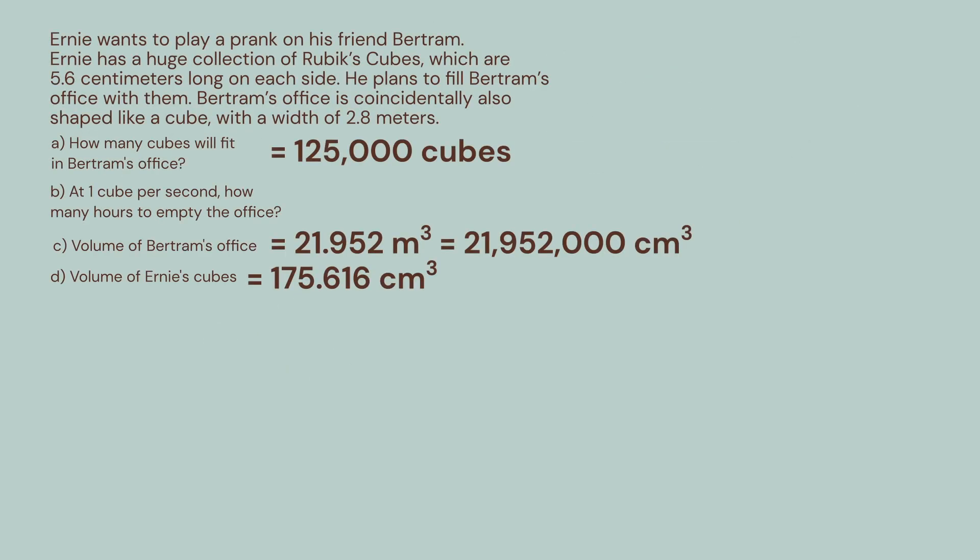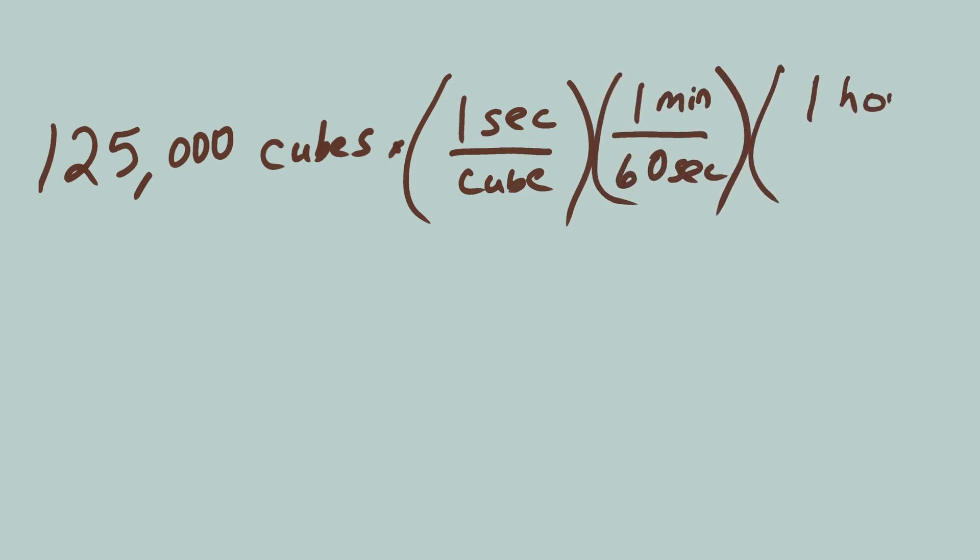How long will it take Bertram to deal with this mess? We know he can remove 1 cube from his office per second. We want the answer in hours, so let's set up that conversion. 125,000 cubes times 1 second per cube times 1 minute per 60 seconds times 1 hour per 60 minutes.